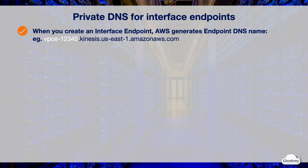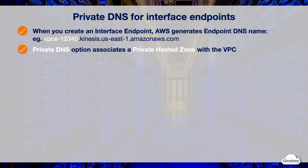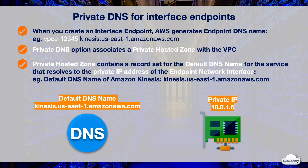For AWS services and AWS Marketplace partner services, the private DNS option is enabled by default. It associates a private hosted zone with your VPC. The private hosted zone contains a record set for the default DNS name of the service that resolves to the private IP addresses of the endpoint network interfaces in your VPC. This enables you to make requests to the service using its default DNS hostname instead of the endpoint-specific DNS hostnames.